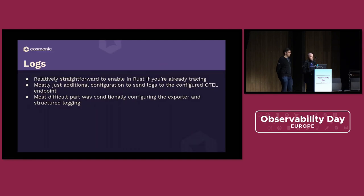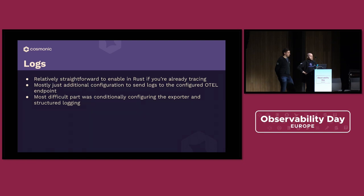Now let's talk about logs. Because a lot of this is particular to Rust, it turns out it's actually really straightforward if you've done distributed tracing. To enable tracing is like 90% of the work if you've already gone through it, because if you think about what a log is, it's just an event — and distributed traces are events. In our case, it was really just enabling some additional configuration to actually send those logs to an OTEL remote endpoint that supported logging. The hardest part was some nuances in the SDK that made the code a little awkward when conditionally configuring the exporter for structured logging, but that wasn't too bad.